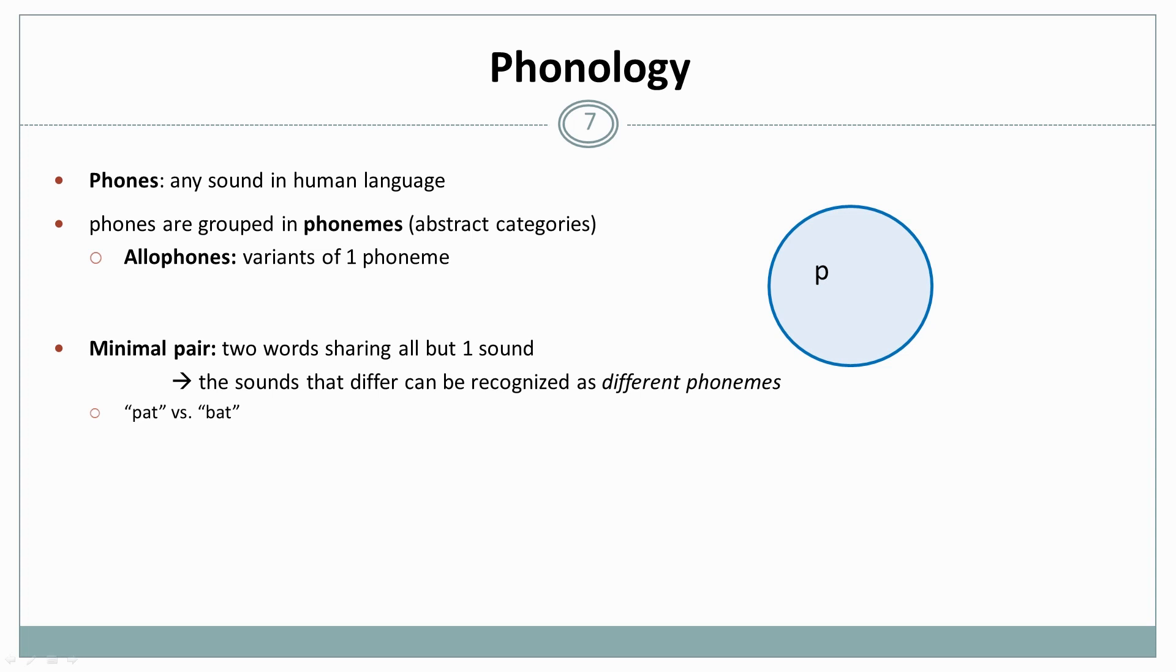And now how do we decide whether two phones have to belong to different phonemes? We typically do this by using a minimal pair. A minimal pair is a pair of two words that share all but one sound. And then we can say that the sounds that differ have to belong to different phonemes. So for example, pet and bat are two different words in English. They mean different things. They're not the same word. So p and b, the sounds that differ, have to belong to different phonemes. So we need another one of these bubbles where we put the b sound.